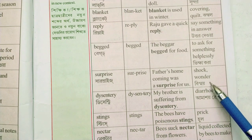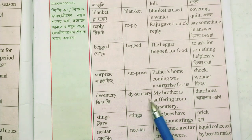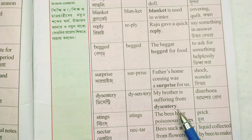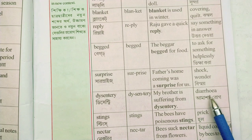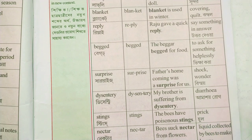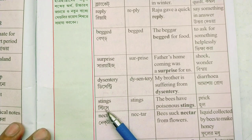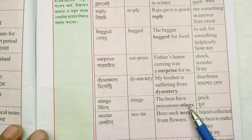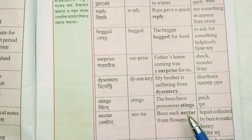Suck — wonder — these are meaning words. Dysentery — my brother is suffering from dysentery. Stings — stings means wool. The bees have poisonous stings. Prick.